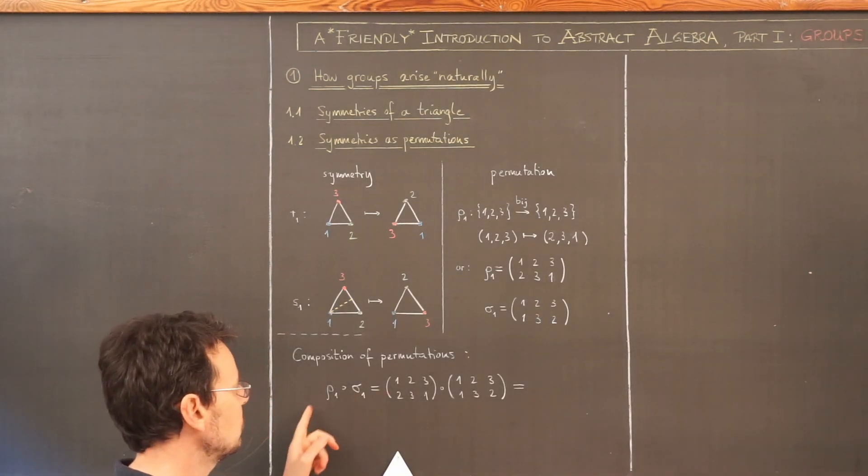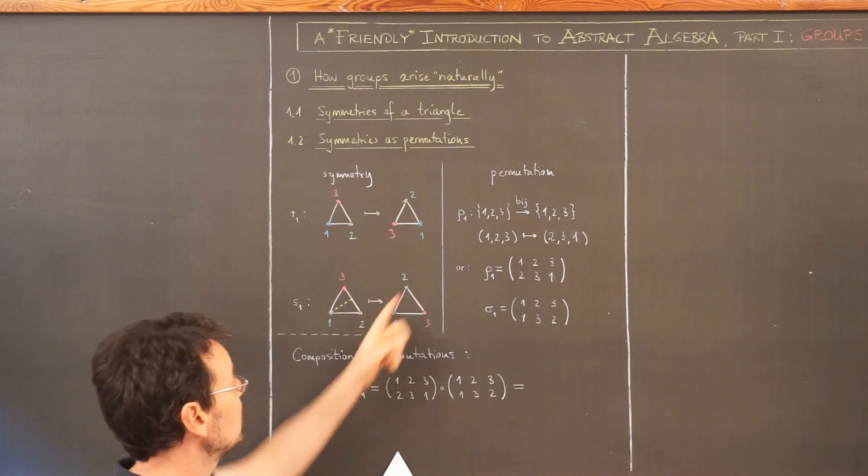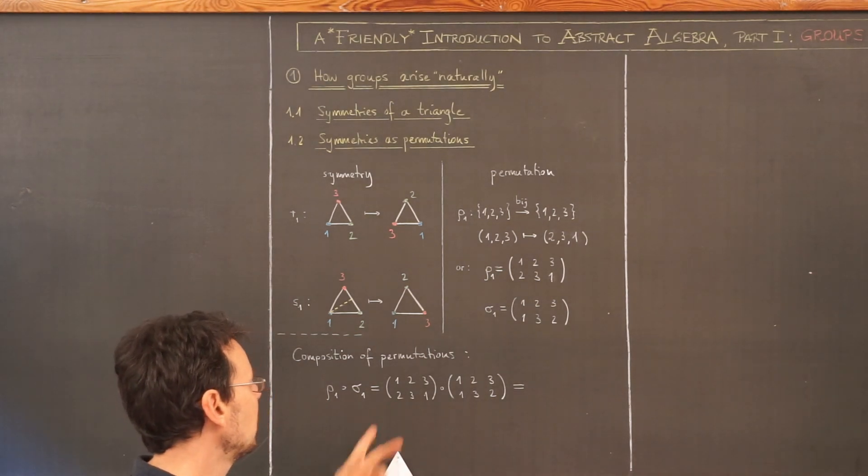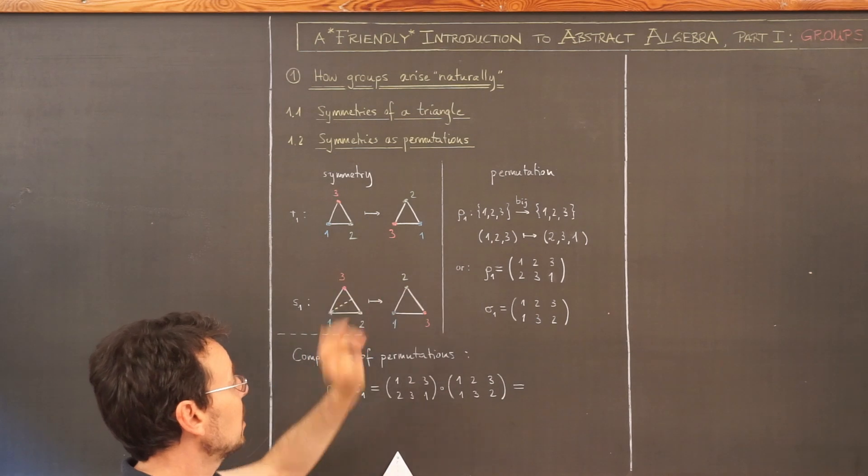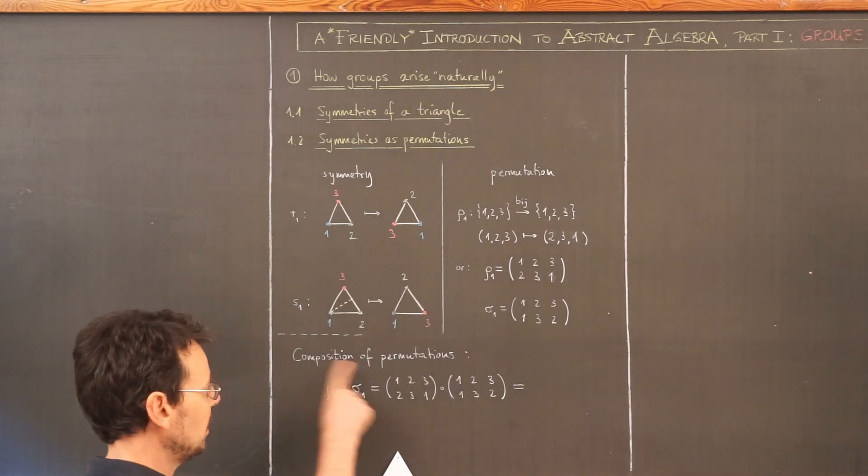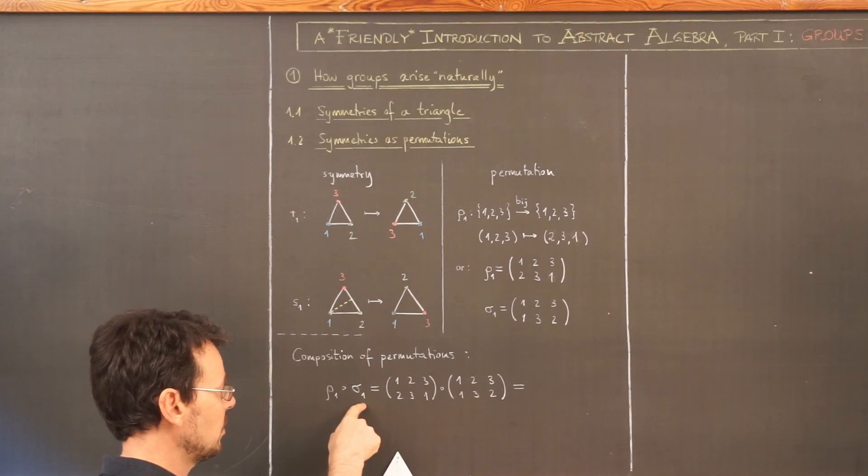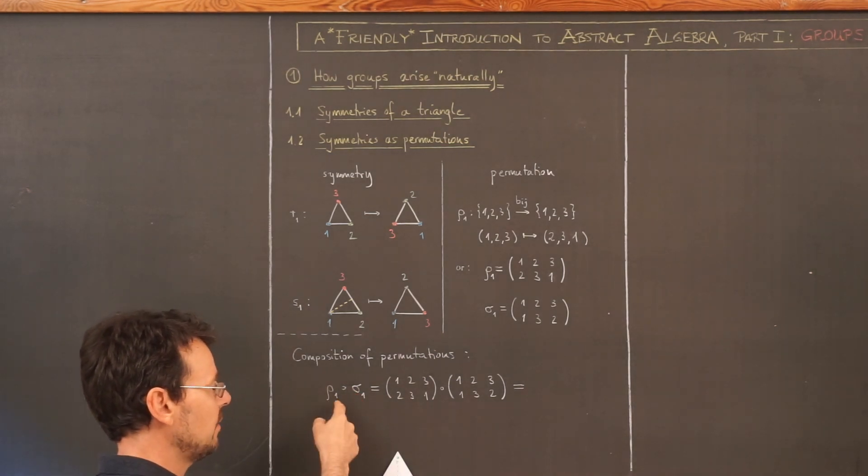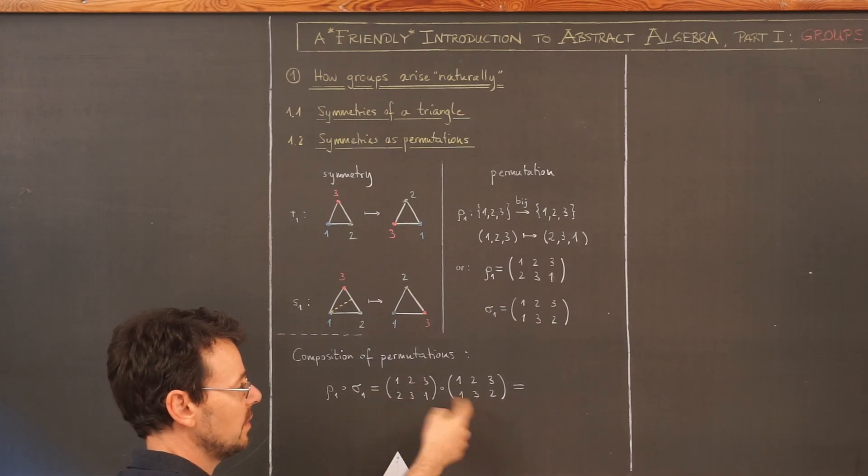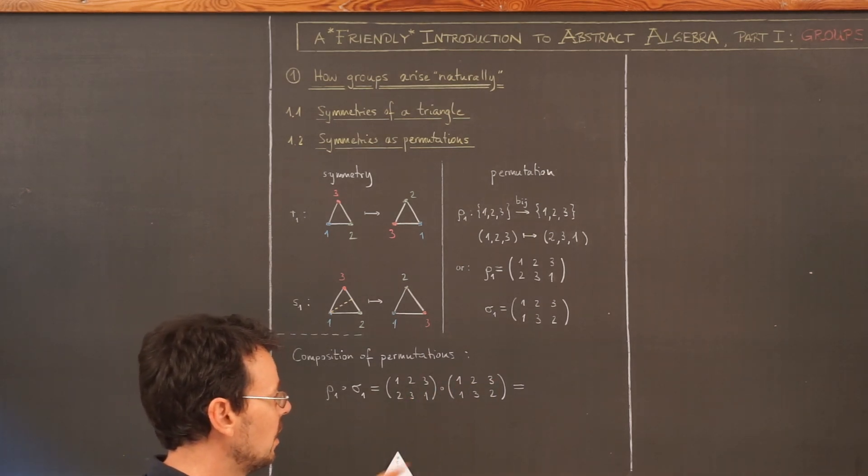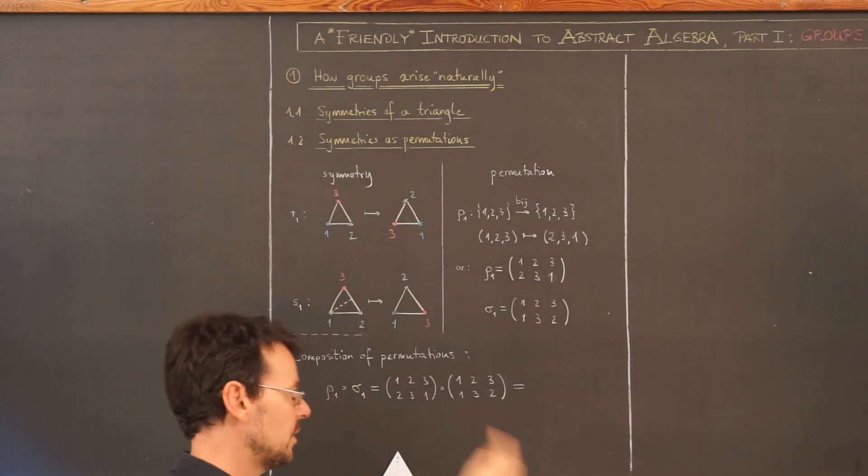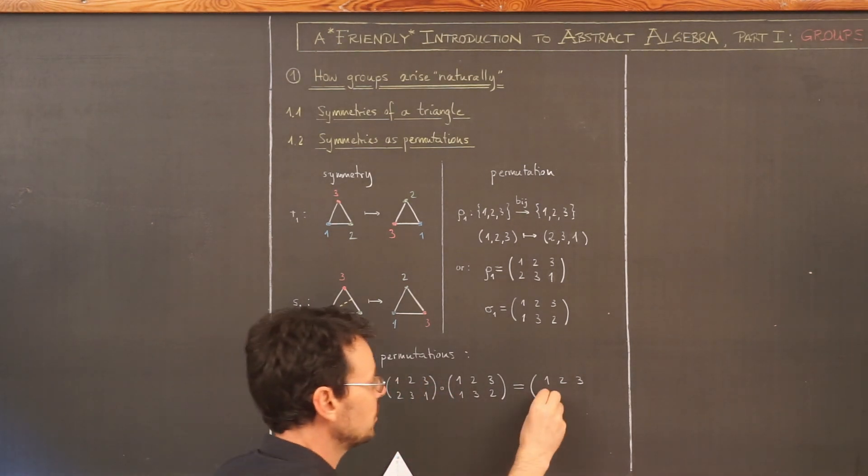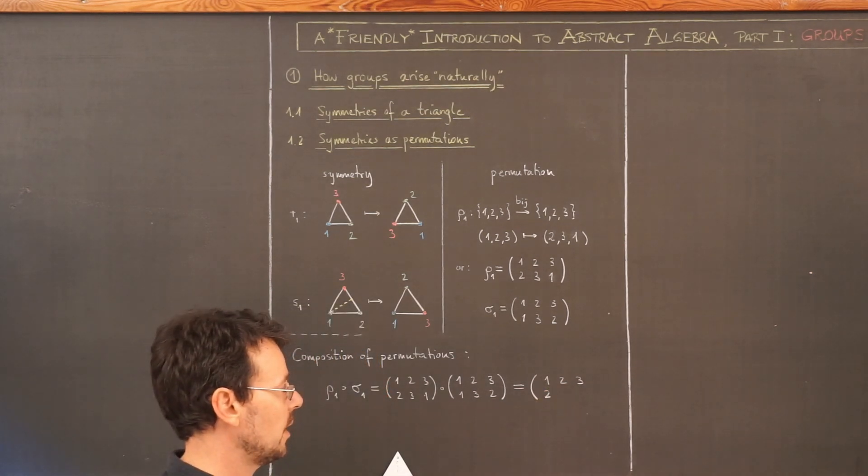Now we take a look at how to compose two permutations. This is very easy and much more convenient than thinking about symmetries of a triangle. So we take this composition, rho 1 composed with sigma 1. Remember, we're reading from right to left, so this means apply sigma 1 first and then after that, rho 1. So you simply write down these permutations here. And now you start here from right to left. So 1 gets mapped to 1, now you look here, 1 gets mapped to 2, so 1 ends up at position 2.